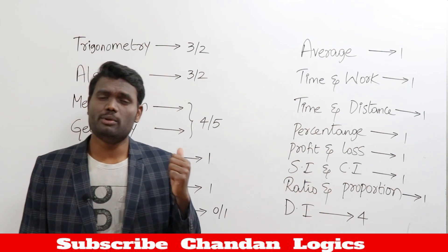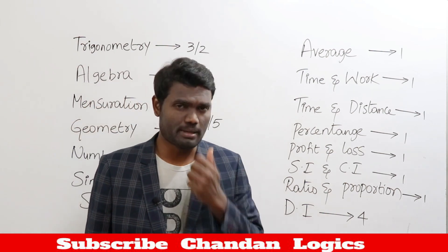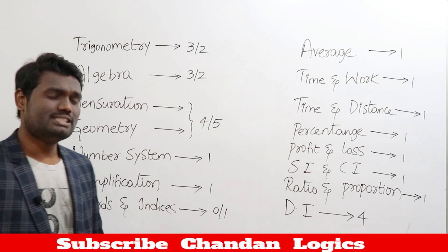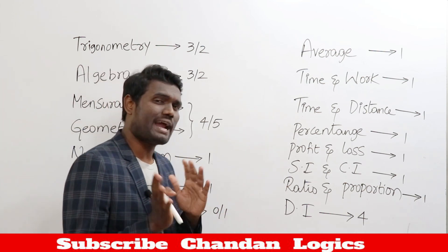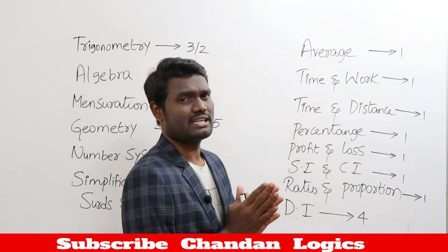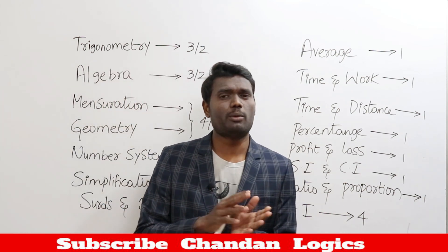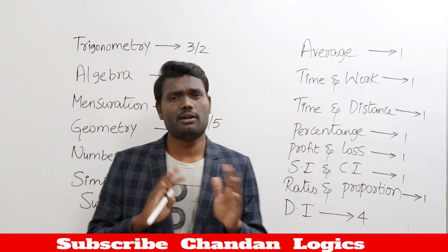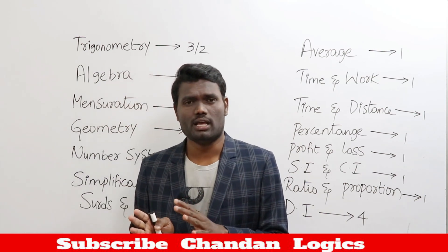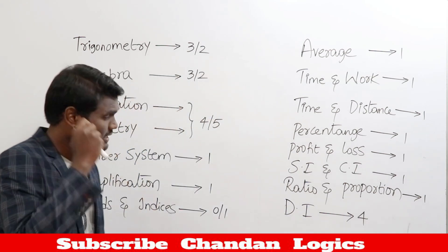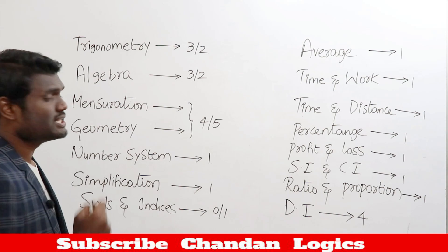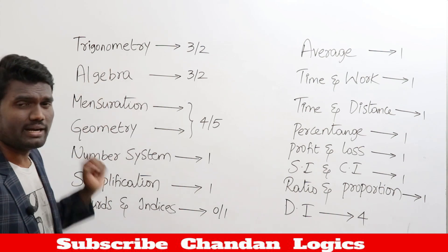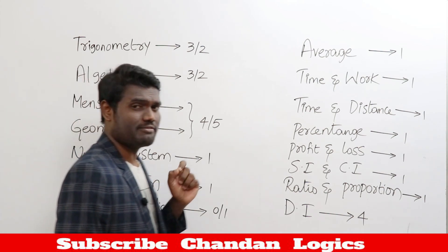First we'll look at your math paper, followed by the reasoning paper. In your math paper, you'll have two categories: arithmetic and advanced math. Let's start with advanced math. In advanced math, you'll have trigonometry.